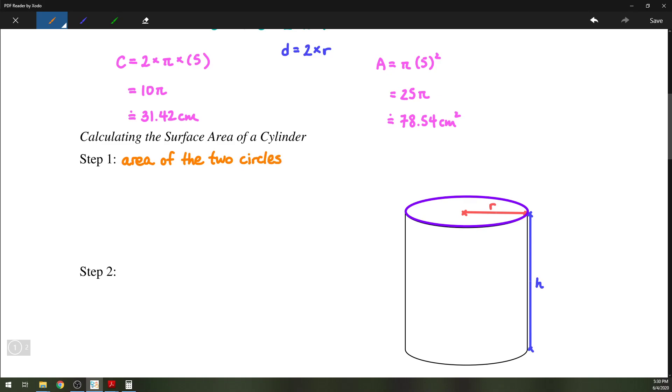So we'll have A equals pi R squared plus pi R squared, which of course is just 2 pi R squared. Once again, this first circle is the top circle, the second circle is the bottom circle. And the idea is that they are identical, so we can just add the two areas together and have 2 pi R squared.